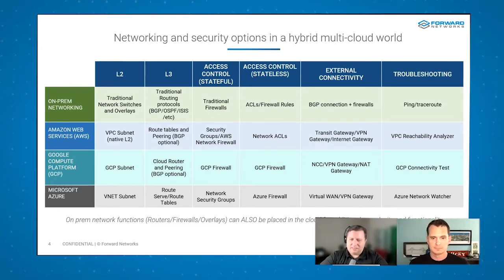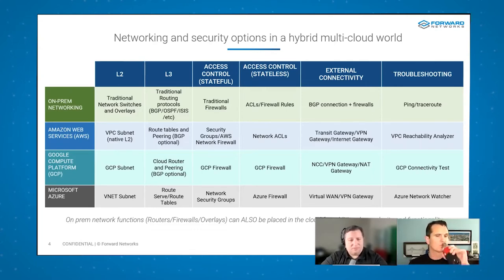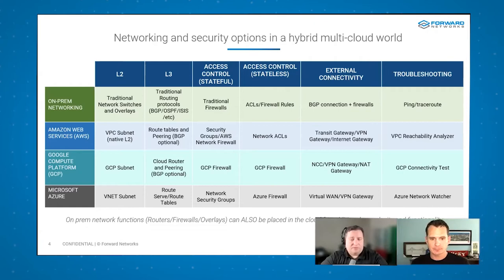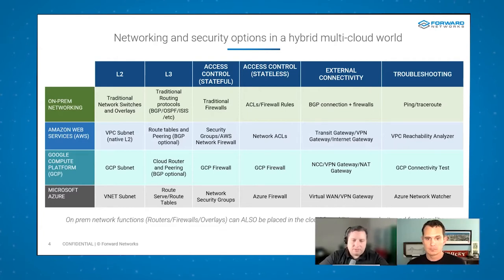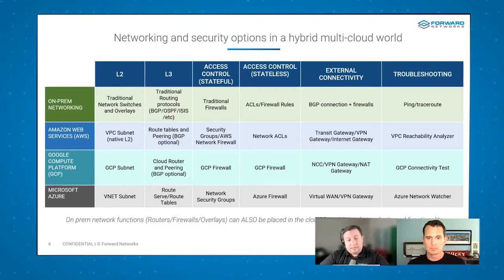If I look at AWS, it has a kind of L2 construct but it doesn't really forward like you'd expect — it doesn't forward ARP, doesn't do the same routing. You can use BGP but they have their own native peering. They use security groups and network ACLs. Every cloud has its own spin on things. AWS has VPC Reachability Analyzer for troubleshooting, but it only works within its own sandbox — it doesn't help you when an application goes between clouds or to on-prem.